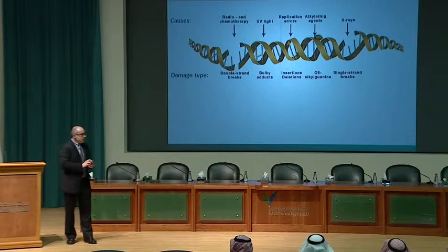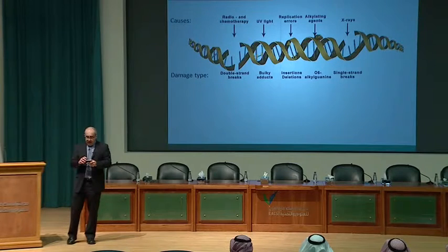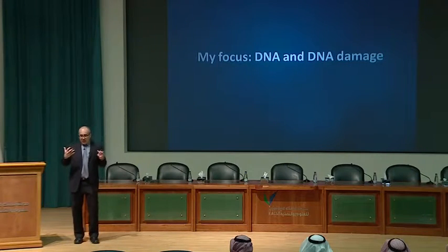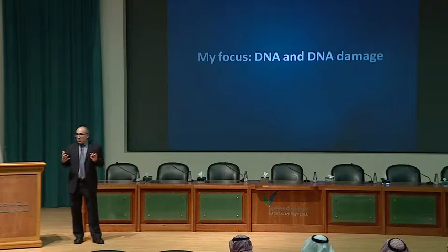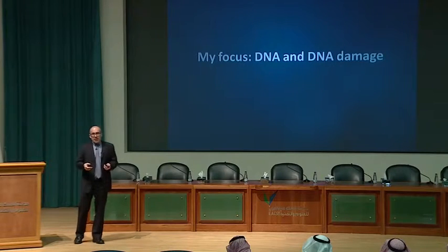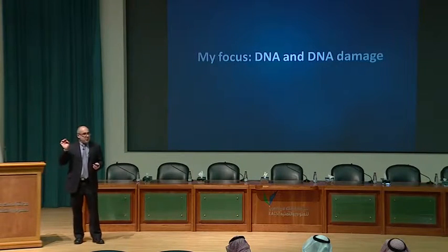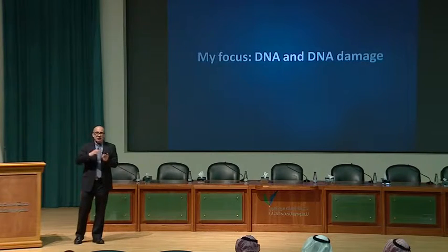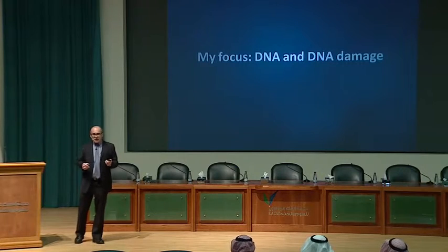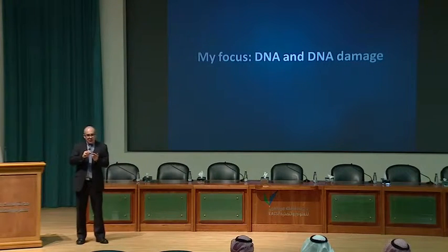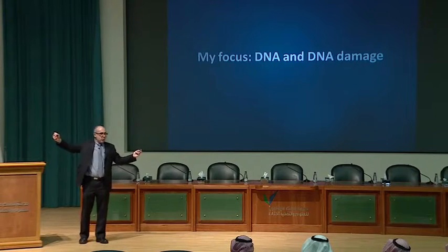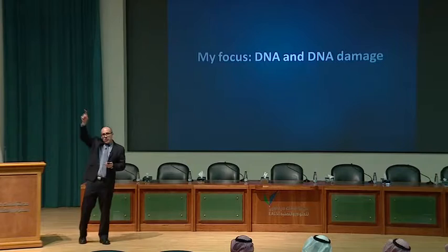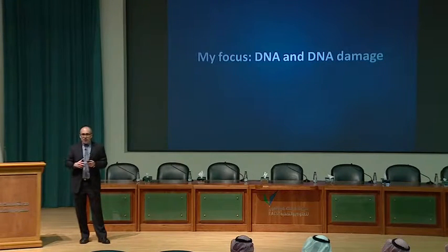My lab focuses on DNA repair and DNA damage processes. We have many cells — we start out with one cell, which develops and divides into approximately 10^13 to 10^14 cells that make up a single human being. Every cell in our body has a full complement of DNA with around 5 × 10^9 base pairs. If you take the DNA from a single human cell and stretch it end to end, it would be approximately 1.5 to 2 meters — meaning a single human being has enough DNA to go to the sun and back 550 times.